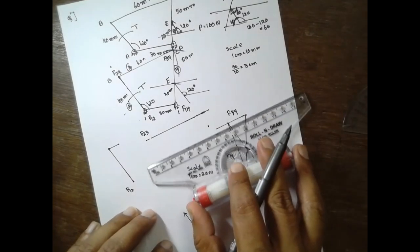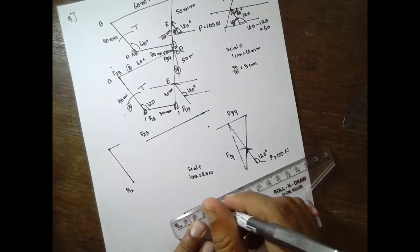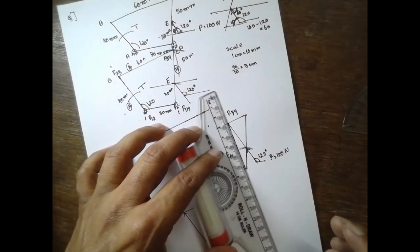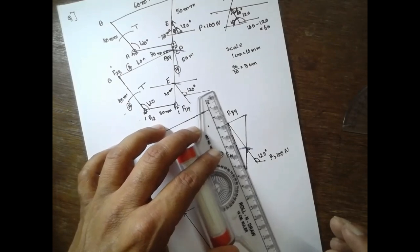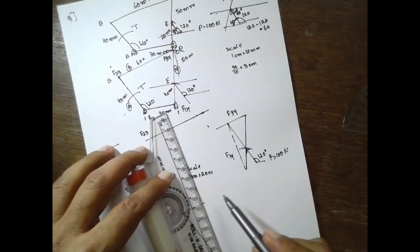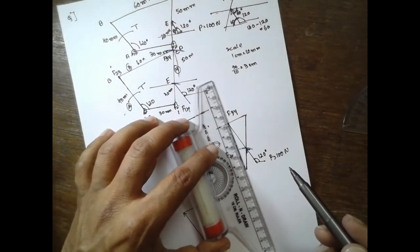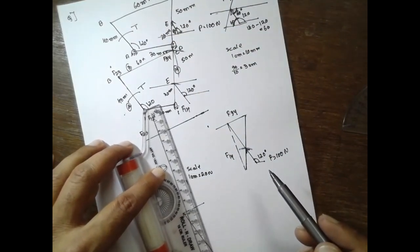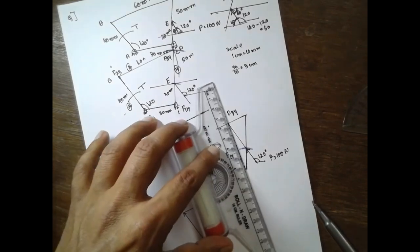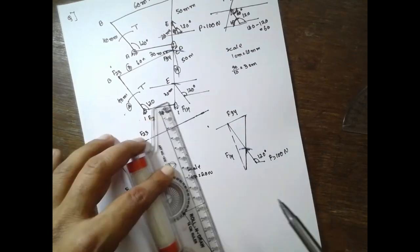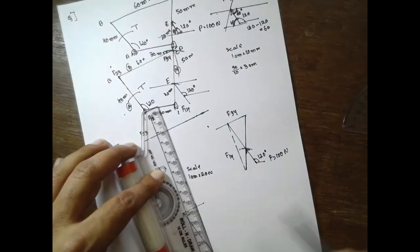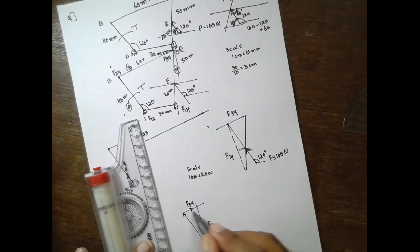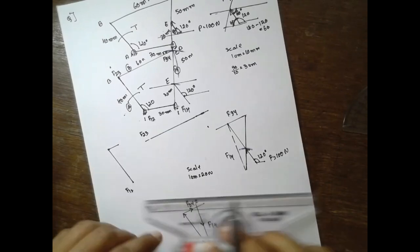Next, I will consider F34 here — I will draw 3-4. Next, F14 — I will draw 1-4. From this, 1-4, this is F14. This is F14. 3-4 — if the arrow is in this direction, the next arrow will be in this way, and the next arrow will be in this way.